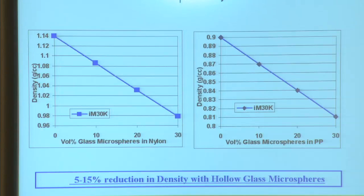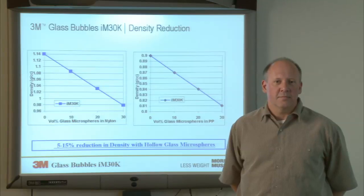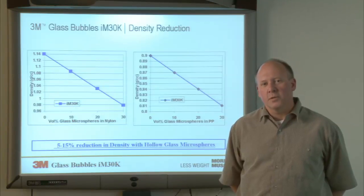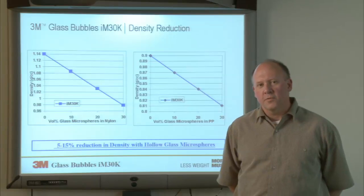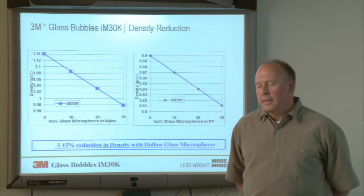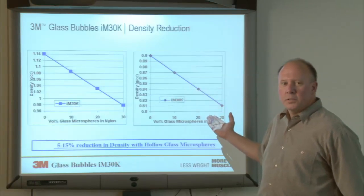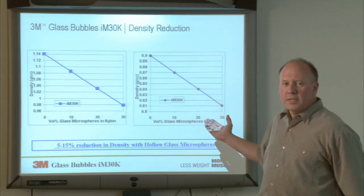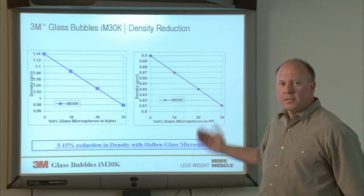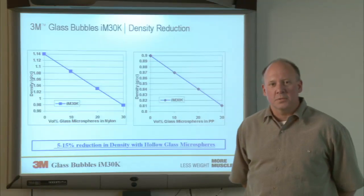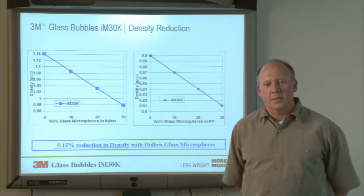We can even reduce the density of nylon to the point where we can make it float in hydrocarbon fuel. Polypropylene also shows a reduction in density with increasing volume percent of glass bubbles.